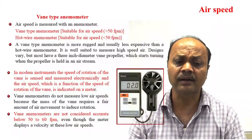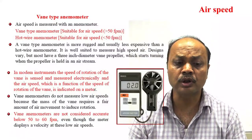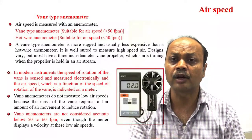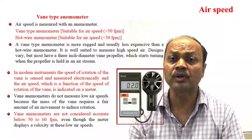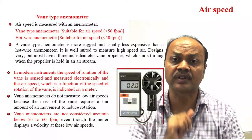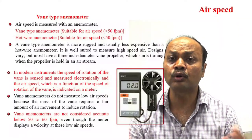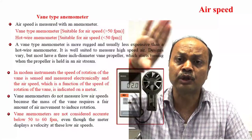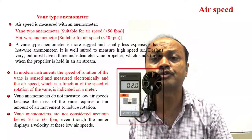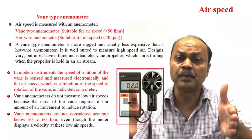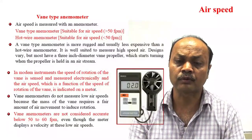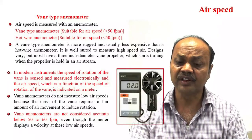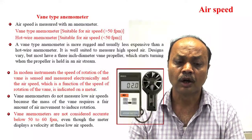Air velocity inside the canopy is very important. Two types of anemometers are commonly used: vane type and hot-wire type. Inside the greenhouse, due to insect net and construction type, air velocity will be less than outside. Air velocity changes throughout the year, season, and day outside, and inside changes correspondingly. Minimum air velocity is required to grow a suitable crop because it changes the microclimate — affecting humidity and various other factors.